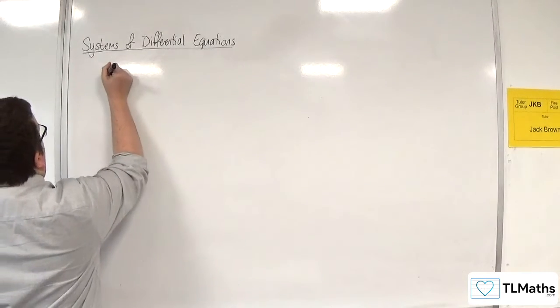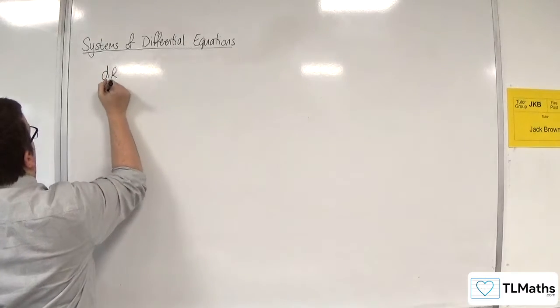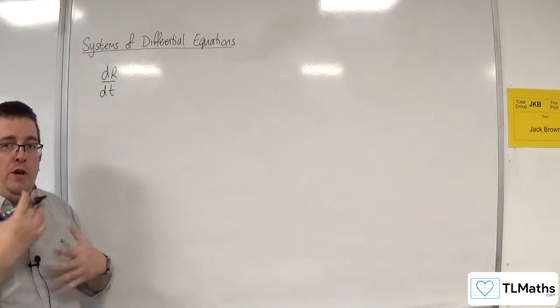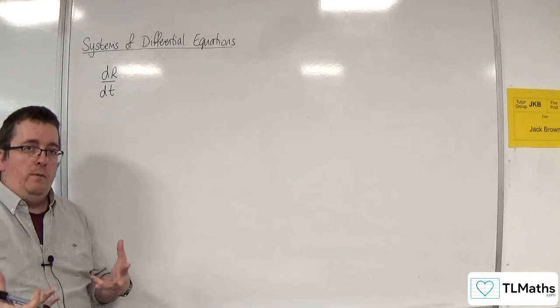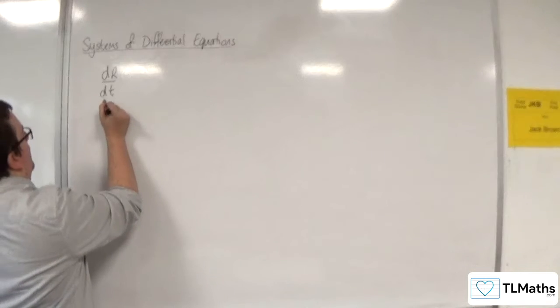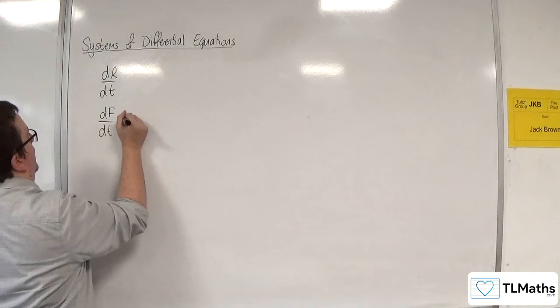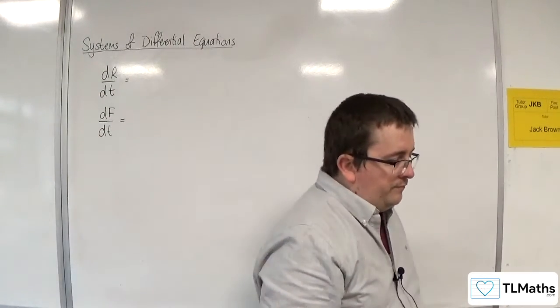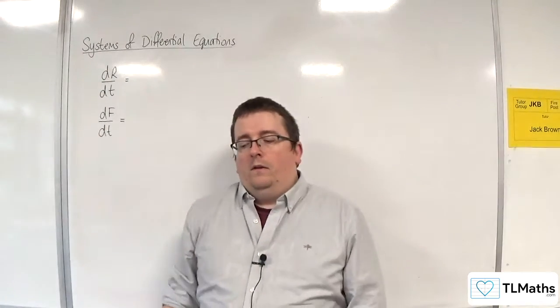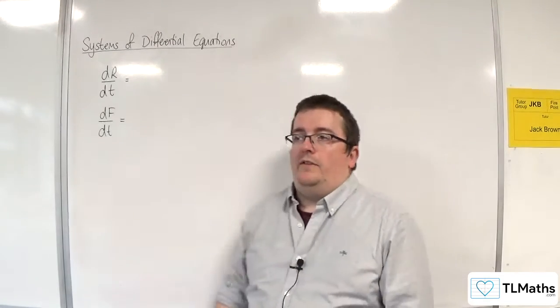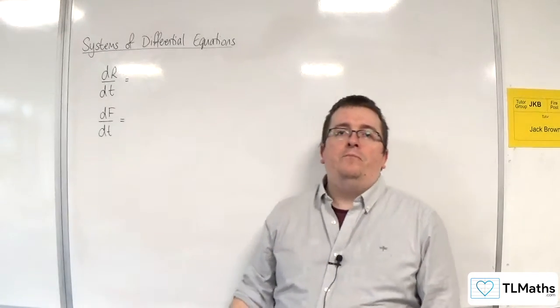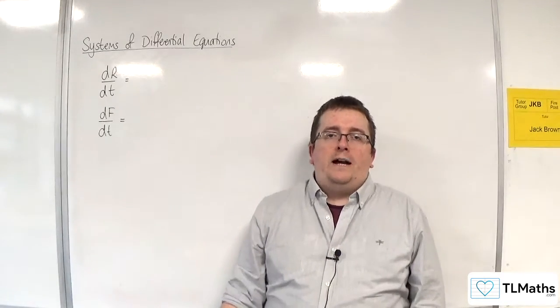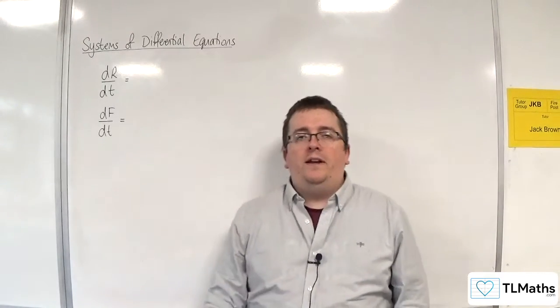So you can build two differential equations. One that tells you the rate at which the number of rabbits is changing over time and one for the number of foxes over time. Now, this is only going to be a simple model. This is assuming that there is enough space, that these are the only two animals that are in this system, in this environment, that are interacting with one another.